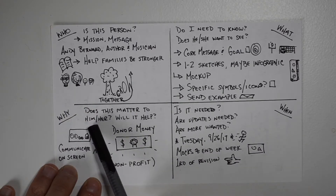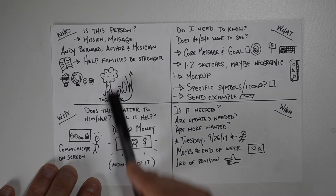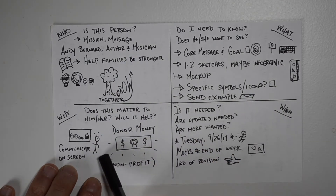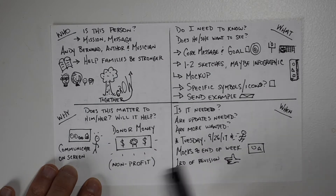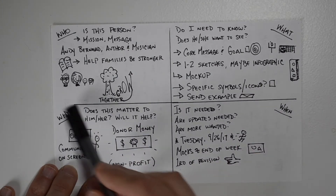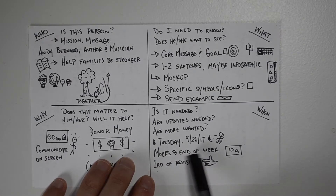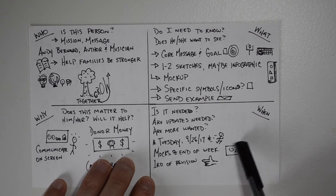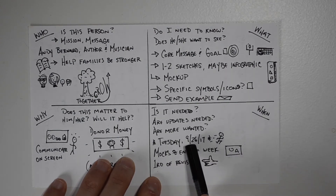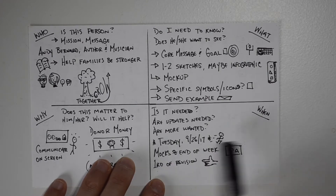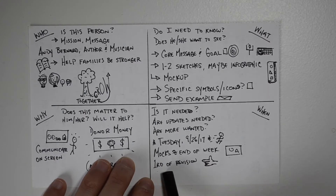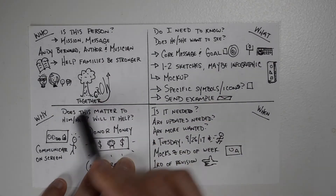The 'why' is really important because it's something I can pull out of the sketches — it goes along with the mission and the message. Why does this matter to them? Will it help? Things like being able to communicate ideas on screen, or to raise donor money — it was a non-profit. And the last part is when: when is it needed, how many updates are needed, are more going to be wanted after this, what's the date, and how many rounds of mock-ups. These are the four W questions I ask anytime I'm talking to a new client to figure out if this is going to be a fit.